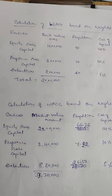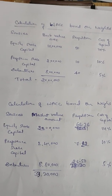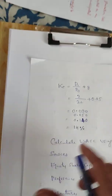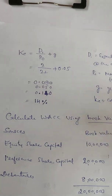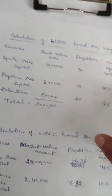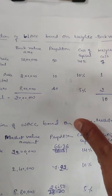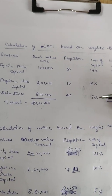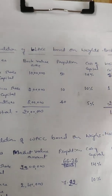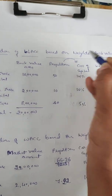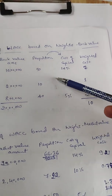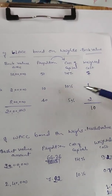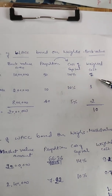Now the weighted cost calculation: equity share capital is 50% weight at 14% cost of capital, preference share capital cost of capital is 10%, and debentures 5%. Then we multiply these two — 50 into 14%, 10 into 10%, and 40 into 5% — to get the weighted costs.